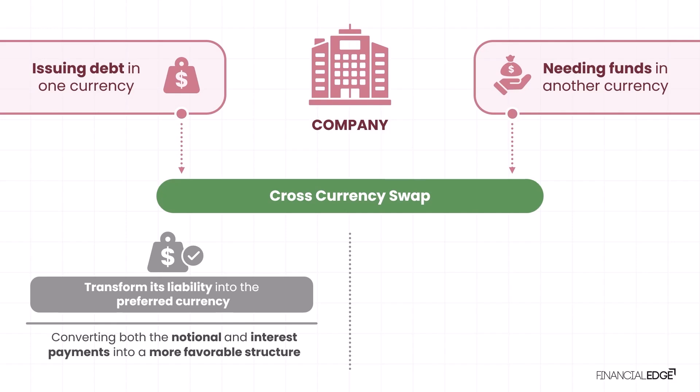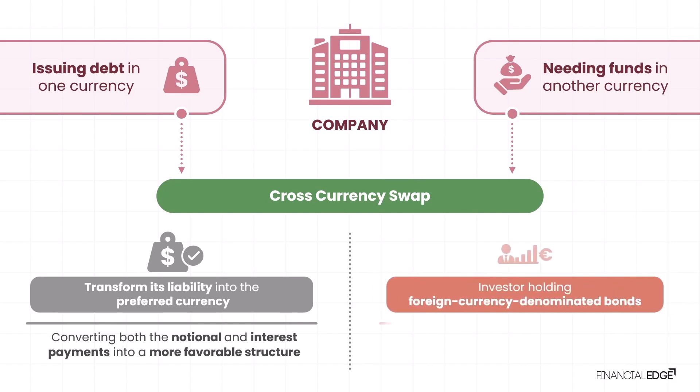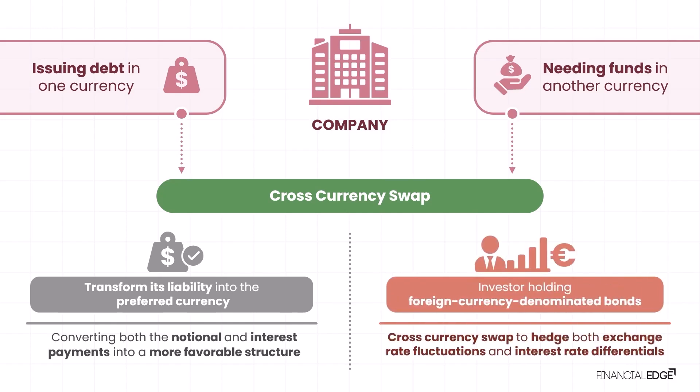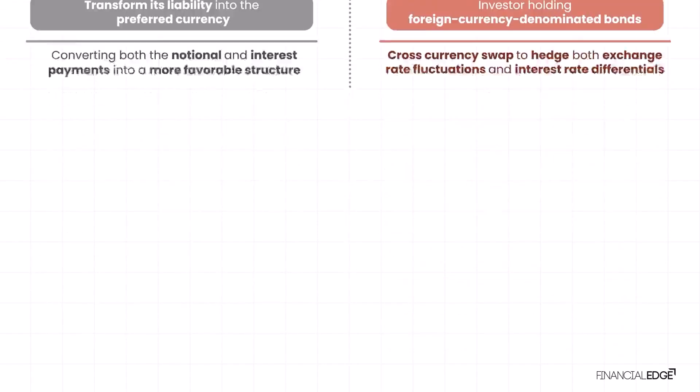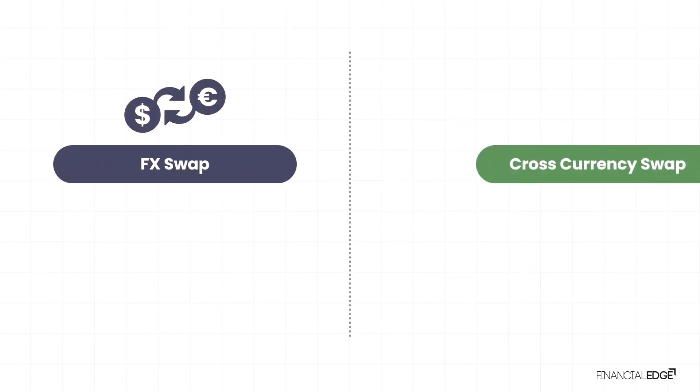Alternatively, an investor holding foreign currency denominated bonds can use a cross currency swap to hedge both exchange rate fluctuations and interest rate differentials, ensuring that returns remain stable in their home currency.